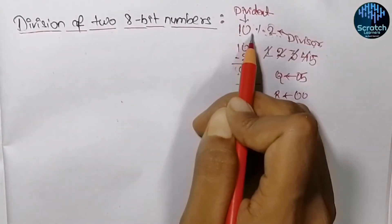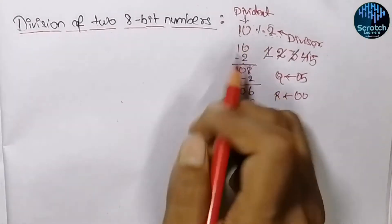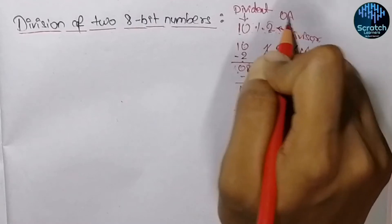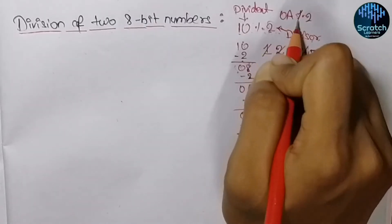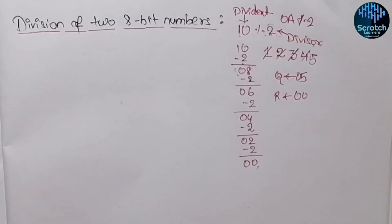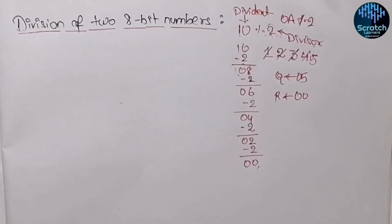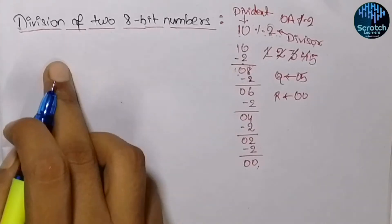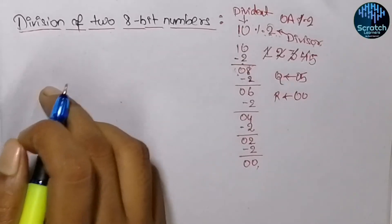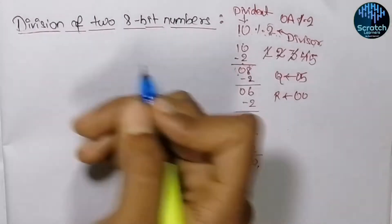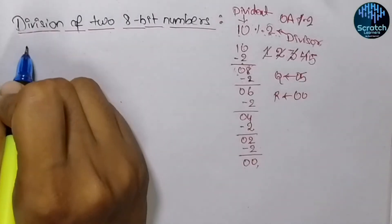So here we get quotient as 05 hex and remainder as 00 hex. Note that 10 here is in hexadecimal, which equals 0A hex — so 0A divided by 2 gives quotient 05 and remainder 00. Now let's write the assembly language program for this division process.